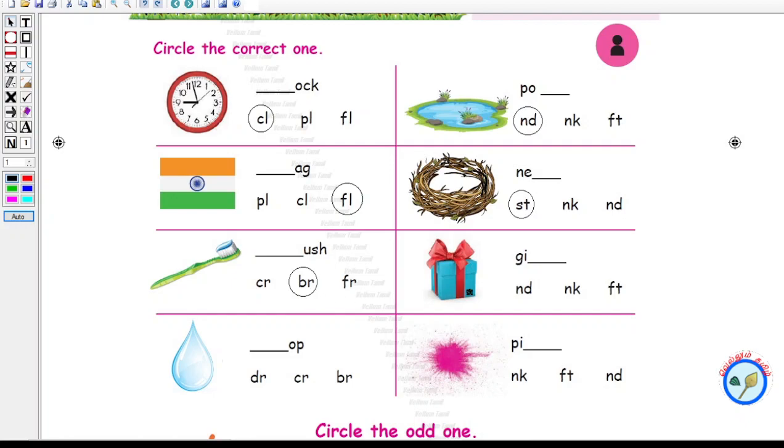What is this? This is a gift. What is the spelling for gift? G-I-F-T. So let me circle F-T here.